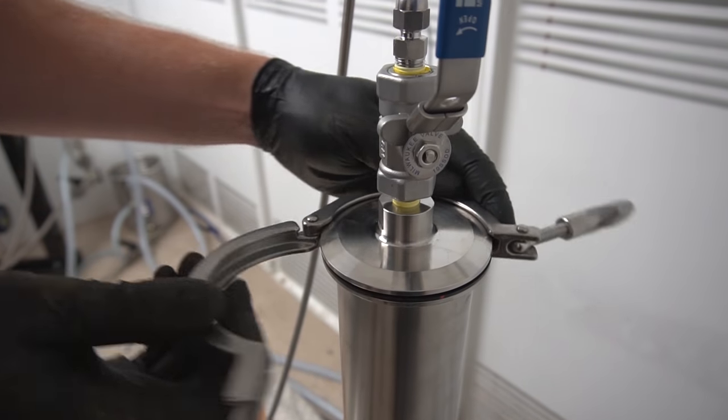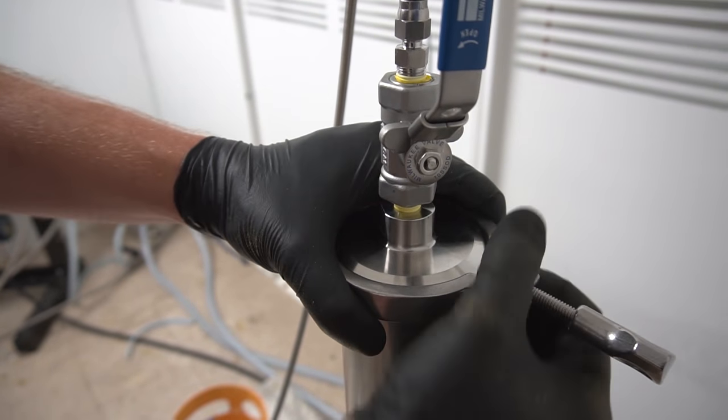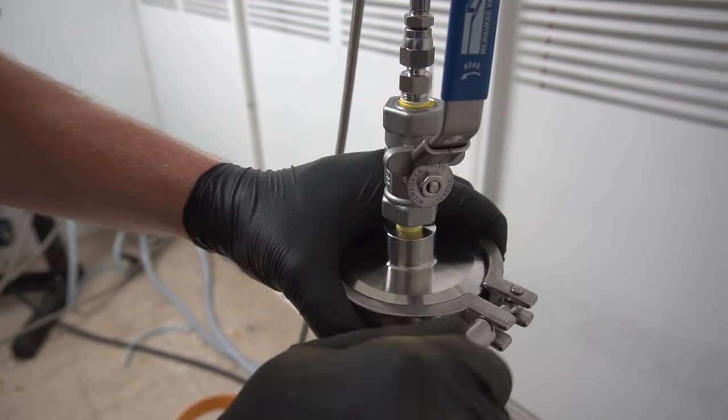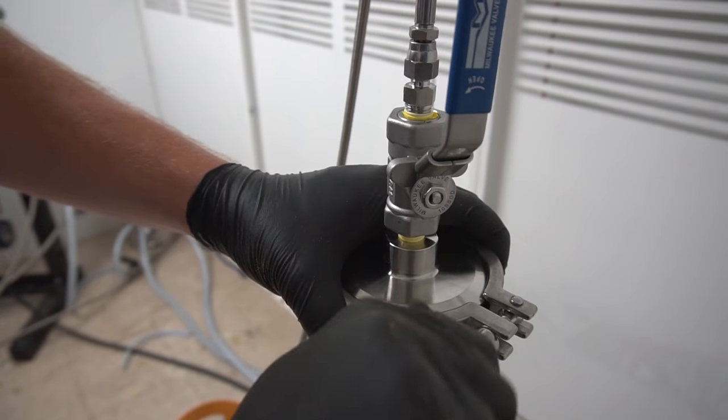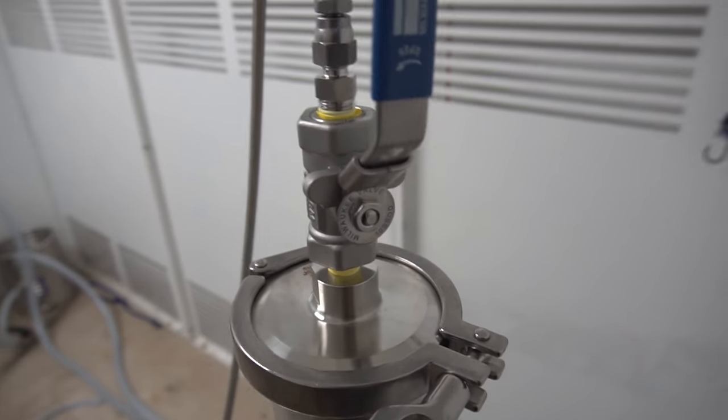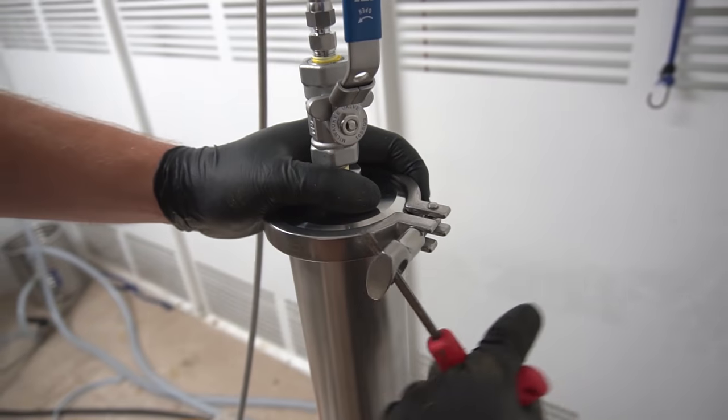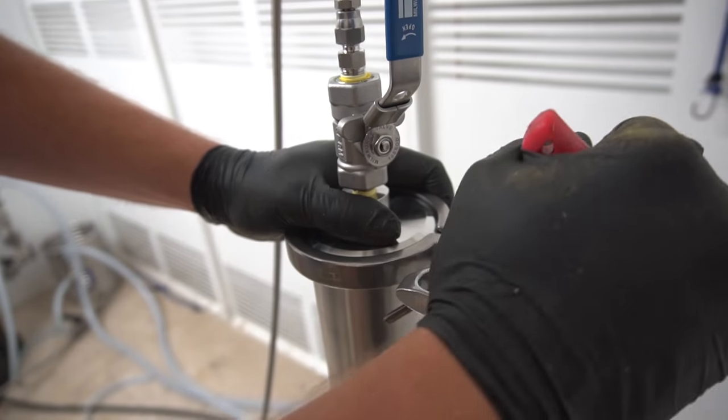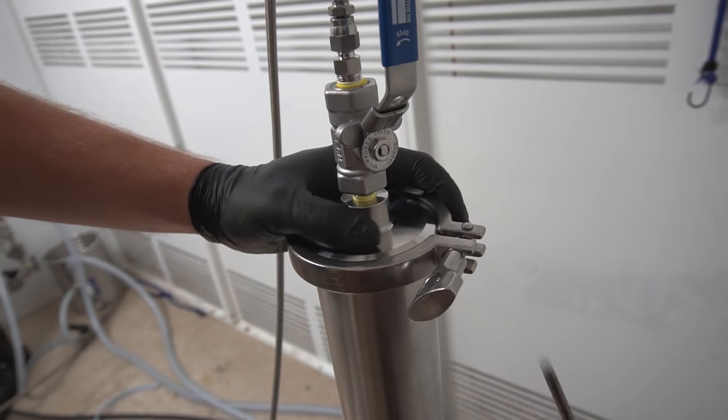Clamp back on. We're using a 3-inch single pin clamp. This clamp is rated to over 150 PSI, we should have no problems here. To turn it tighter, you can use a screwdriver or any random Allen wrench, tighten it up.